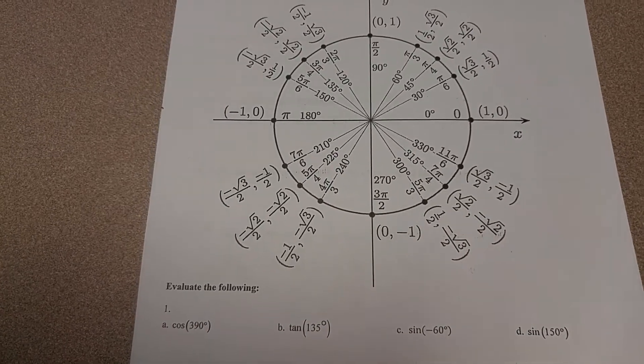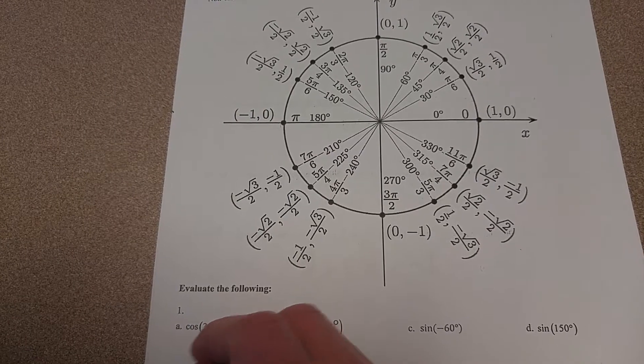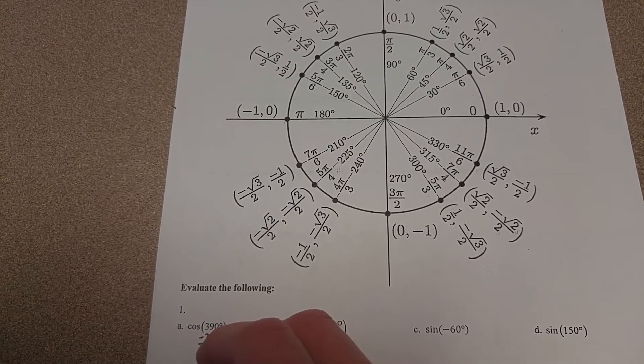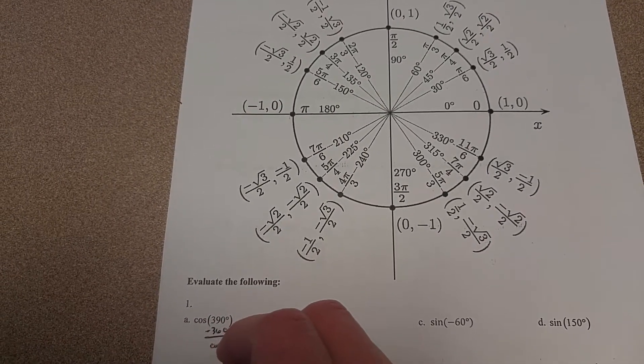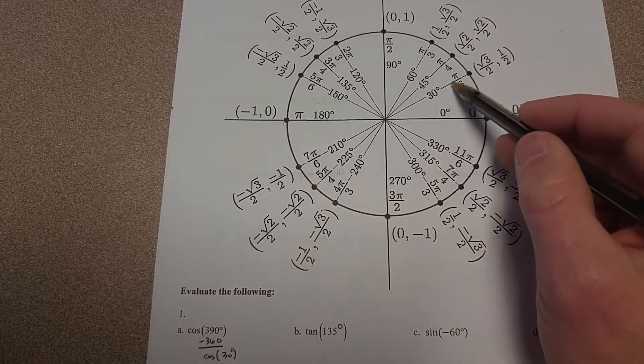The cosine of 390. Remember 390 is bigger than one time around, so if you subtract out the 360, we're really just looking for the cosine of 30 degrees. So you can see that 30 degrees is right here.